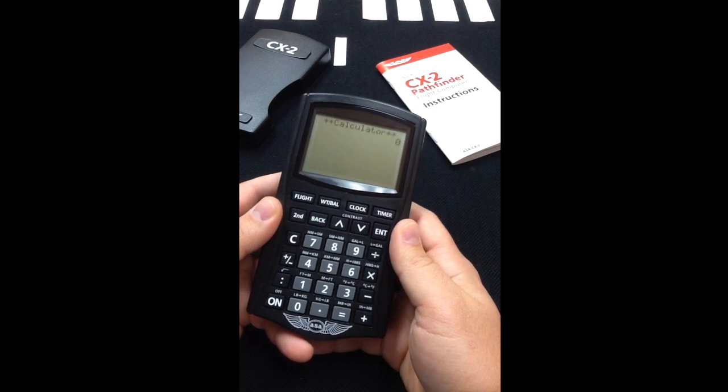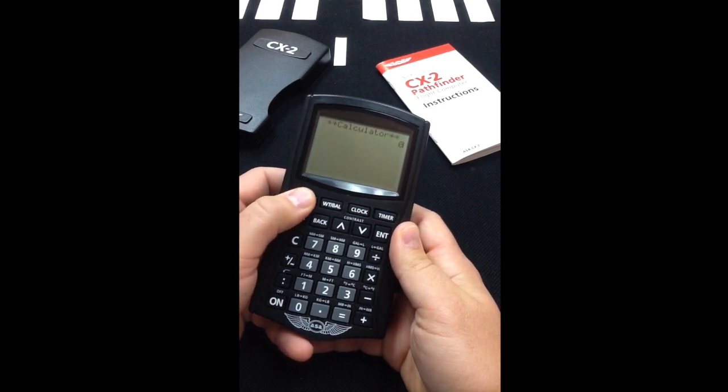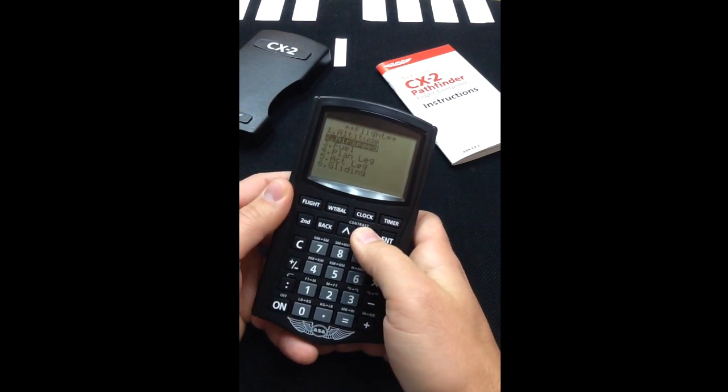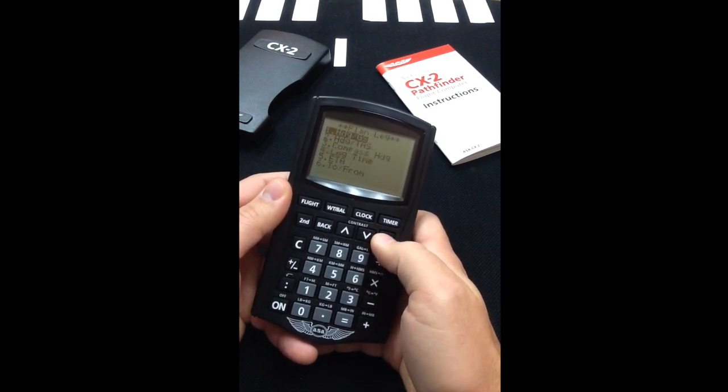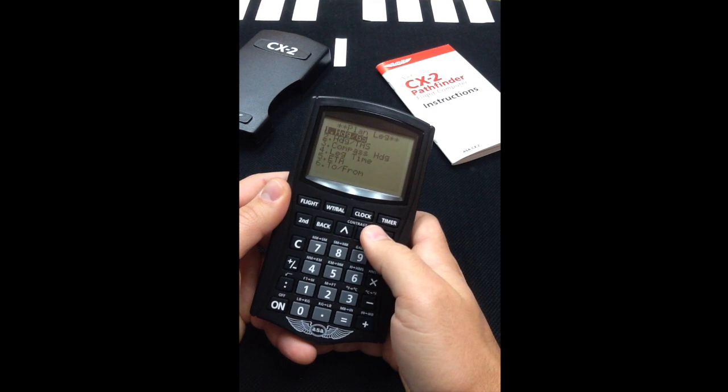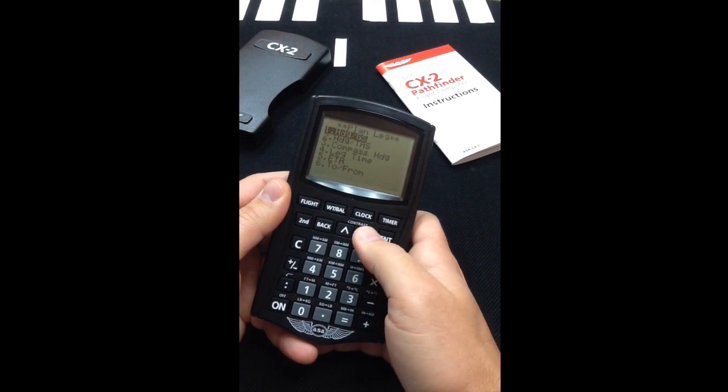On the CX-2, select the flight button and scroll down to plan leg. On the plan leg menu, scroll down to option four, leg time.